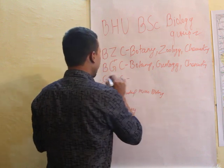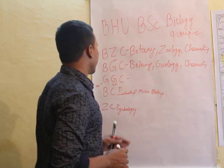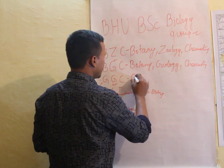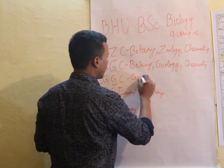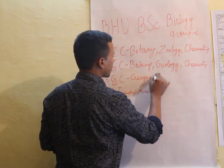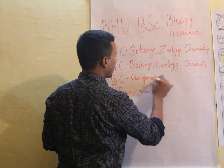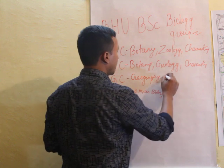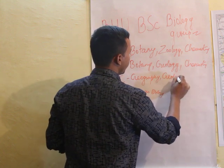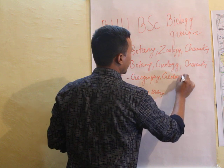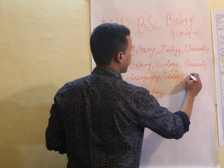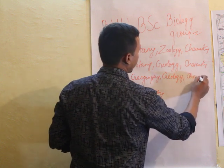The third group is GGC, which stands for Geography, Geology, and Chemistry. In this combination we study Geography and Geology — how different parts of the Earth work — along with Chemistry.